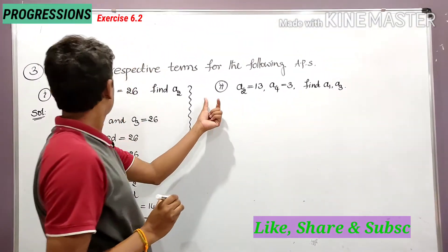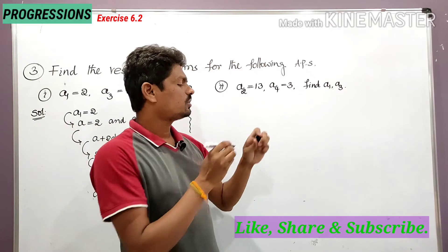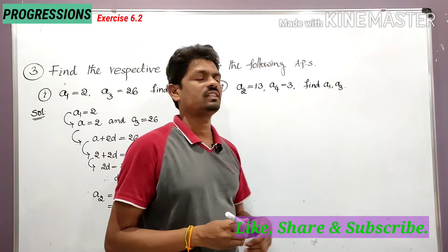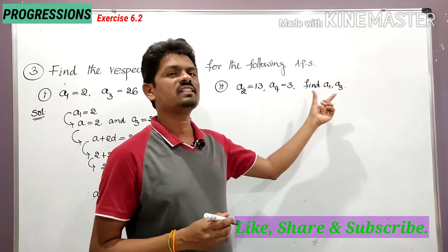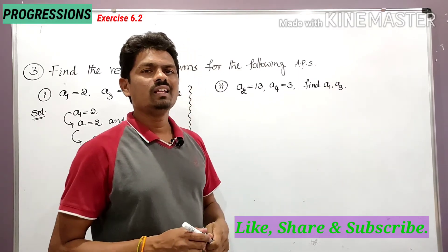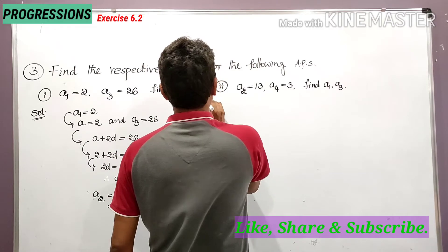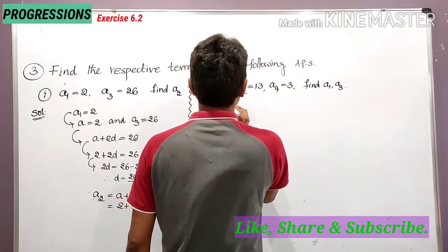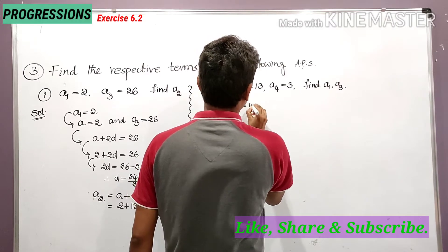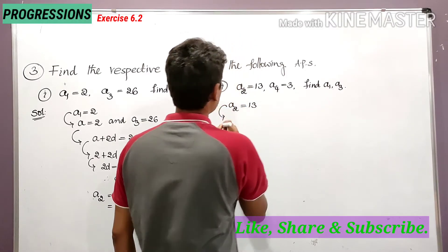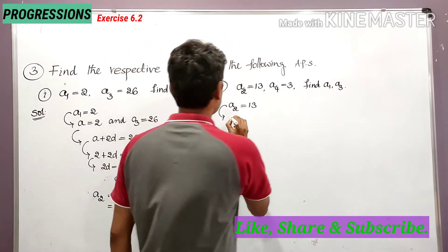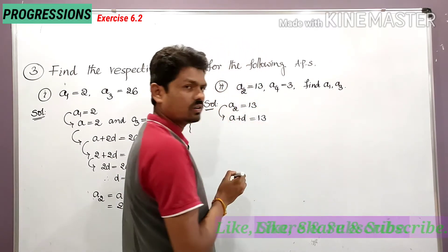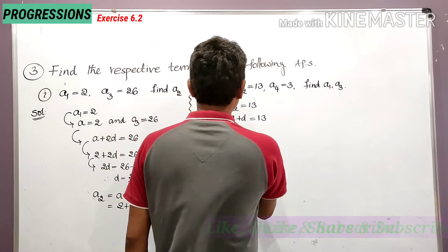Second bit of the third problem: he has given a2 is equal to 13 and a4 is equal to 3. Find a1 and a3. a2 is equal to 13, so a2 can be written as a plus d is equal to 13. Let this be equation number 1.